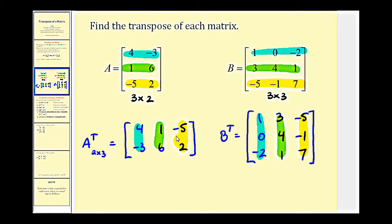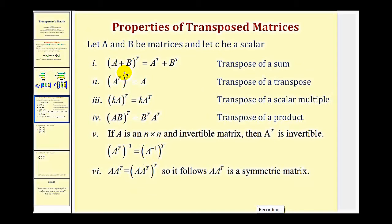Now let's talk about the properties of transposed matrices. Property one: the transpose of the sum of matrix A and B is equal to the transpose of A plus the transpose of B. Property two: the transpose of the transpose of matrix A is just equal to matrix A. Property three: the transpose of a scalar times matrix A is equal to the scalar times the transpose of matrix A.